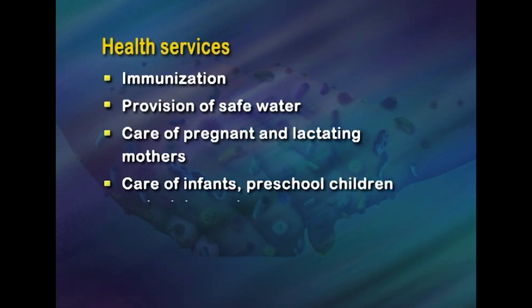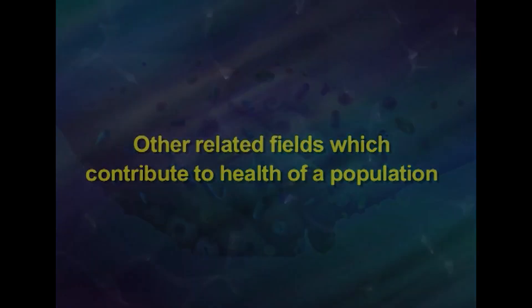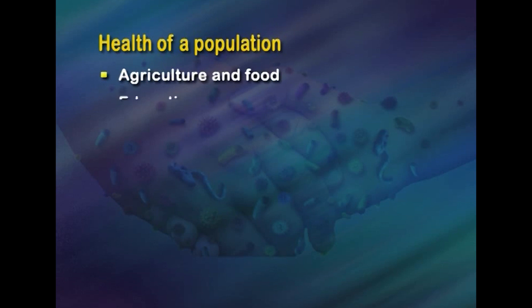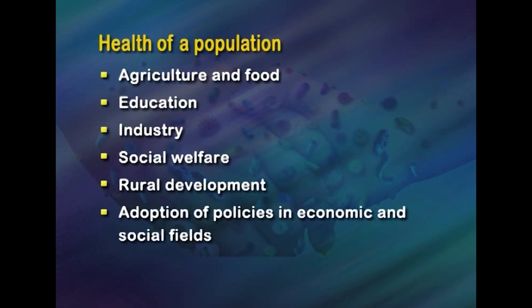Health services that are provided include immunization, provision of safe water, care of pregnant and lactating mothers, care of infants, preschool children, and adolescents, and providing nutrition. Care has to be taken to avoid under-utilization of these services. Age and gender: chronic diseases accompany the aged, and the elderly population deserves special attention. Other related fields contributing to the health of a population include agriculture, food, education, industry, social welfare, rural development, and adoption of policies in economic and social fields such as employment opportunities, increased wages, prepaid medical programs, and family support systems.